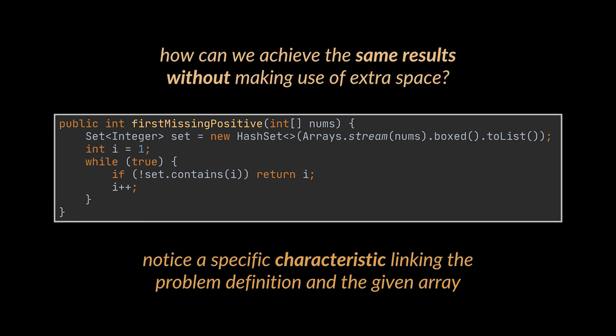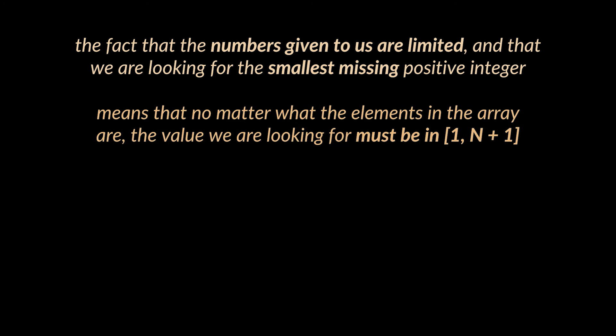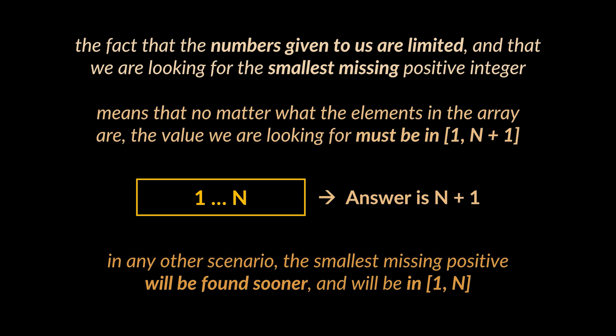To do that, we will have to notice a specific characteristic linking the problem definition and the given array. The fact that the numbers given to us are limited and that we are looking for the smallest missing positive integer means that no matter what the elements in the array are, the value we are looking for must be in the range of 1 to n plus 1. Why? Think about it. If the values given to us indeed range from 1 to n, then the smallest missing positive must be n plus 1. And if there is any other combination of values, whatever it is, then we won't even have the time to reach n plus 1. The smallest missing positive will be found sooner and will be in the range 1 to n.